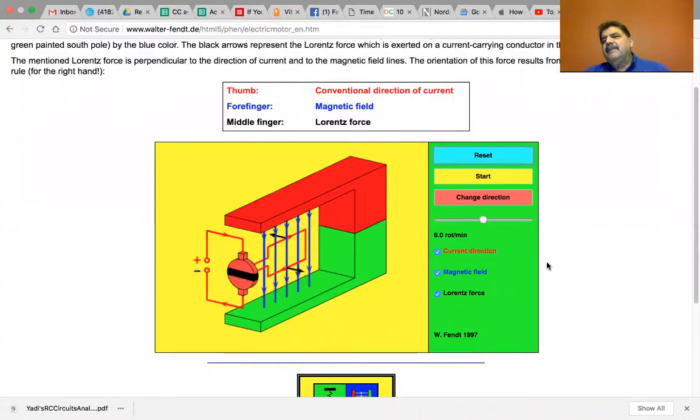We're going to take a little aside. We just discussed magnetic torque and we're going to use a Walter Fent demonstration. Our old friend Walter Fent, we've seen him before because he has some nice little animations. And here he has a DC motor.